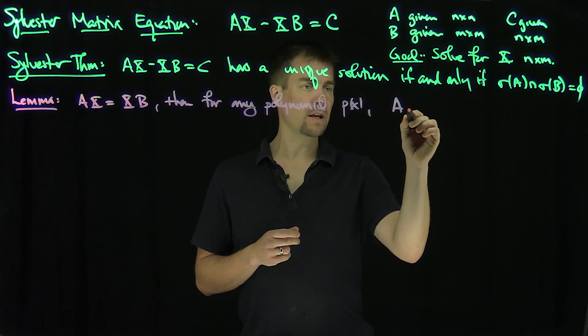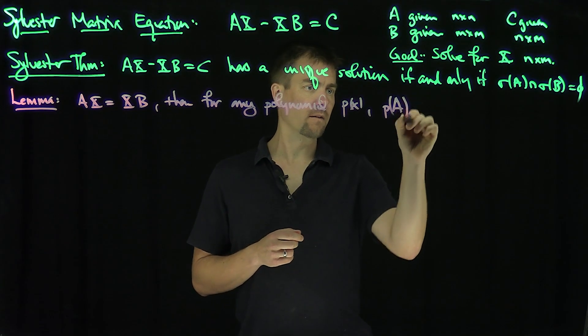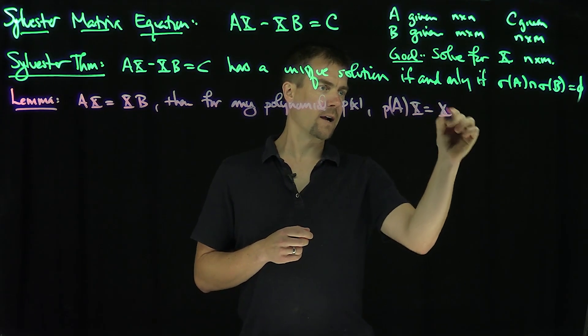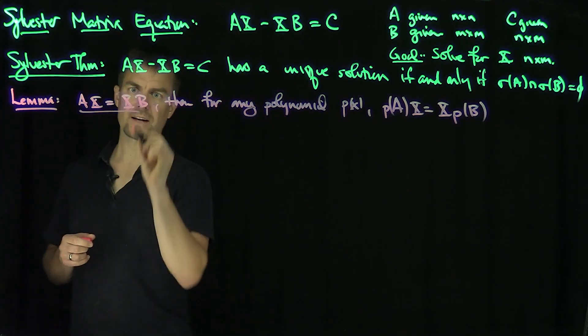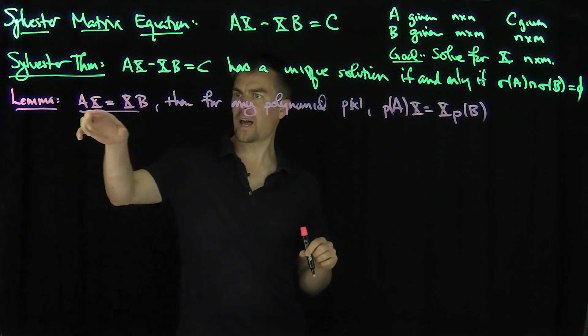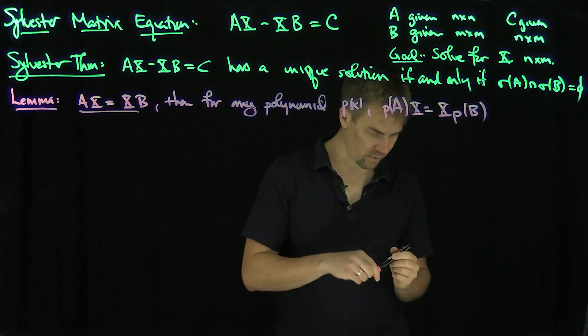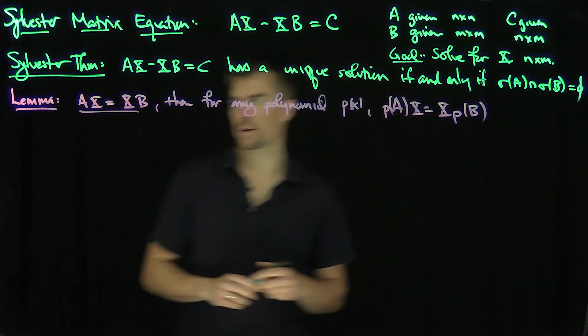we have p(A)X equals X p(B). In other words, if this relationship holds, AX equal to XB, then I can replace A and B with any polynomial of those matrices. So how do you prove something like this?